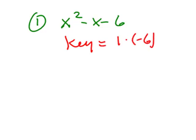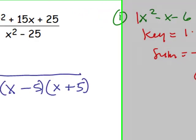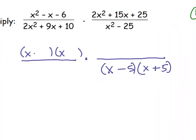First, let's factor the x squared minus x minus 6. Key number is 1 times negative 6, which is negative 6. And the sum number is negative 1. The numbers that work for this are negative 3 and positive 2. And because this is a simple factoring with a 1x squared, these are the numbers that fit into the binomials that we have over here in the first numerator. Minus 3 and plus 2.